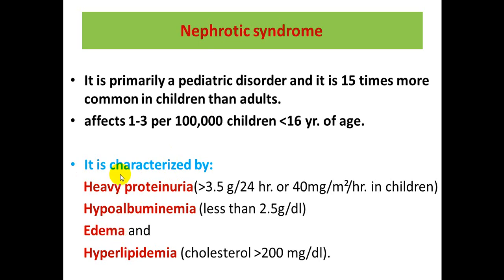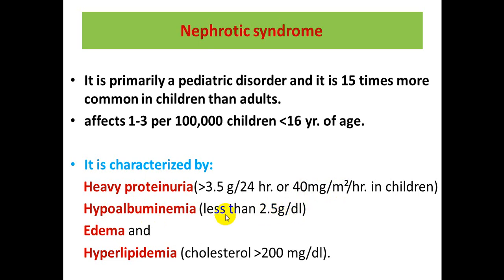These are the four components of nephrotic syndrome: heavy proteinuria — i.e., nephrotic range proteinuria — defined as excretion of more than 40 mg per square meter per hour; and hypoalbuminemia, where serum albumin is less than 2.5 g per deciliter.